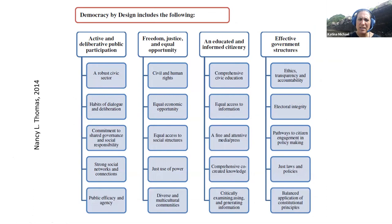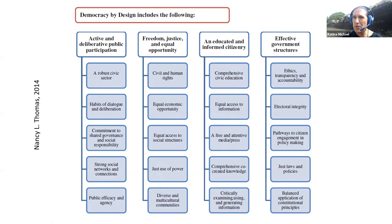Here's an example of democracy by design from 2014 — a beautiful diagram by Nancy Thomas looking at active and deliberative public participation, freedom, justice and equal opportunity, an educated and informed citizenry, and effective government structures. Much of this connects to Vanessa Teague's open democracy and democracy-by-design work in Australia, particularly with voting systems, elections, and democratic processes.